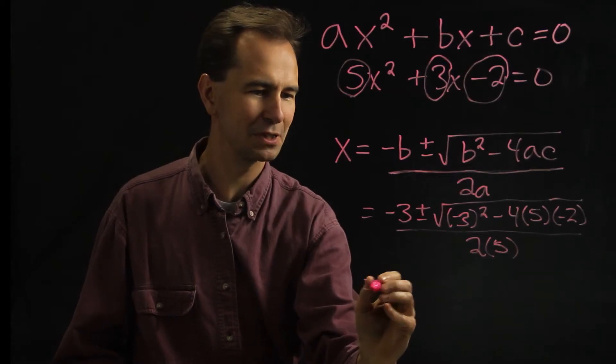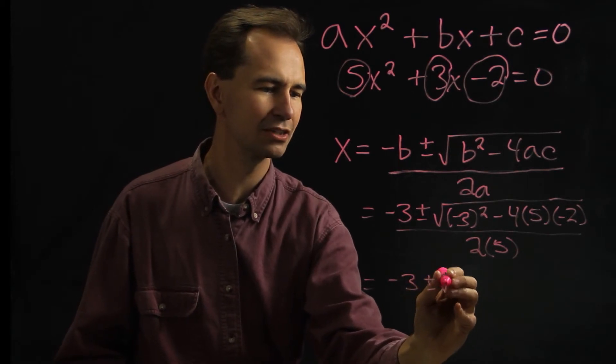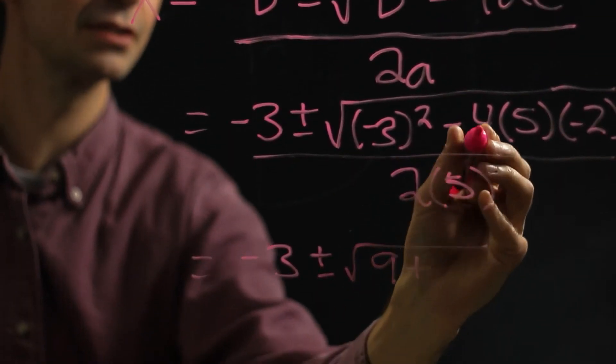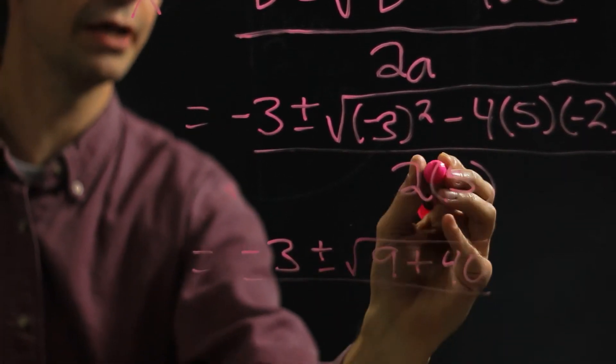So simplifying that out a little bit, we'd get negative 3, plus or minus the square root of 9, plus that'd be 40, all divided by 10.